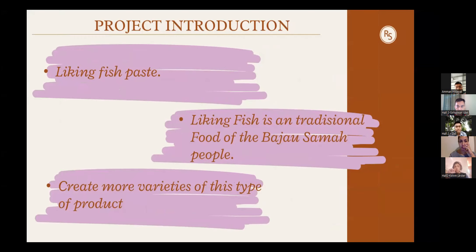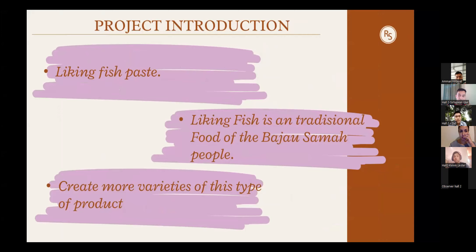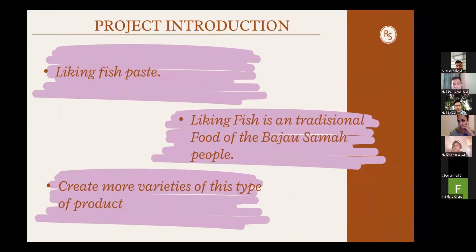As culinary art students, my team and I chose to do research on food in Sabah, selecting leaking fish as our main ingredient. Leaking fish is a Bajau food from Sabah — one of the ethnic groups famous in the West Coast Division of Sabah. Leaking fish is made from a sea fish called queen fish or talang, and is traditionally prepared using drying and salting methods.